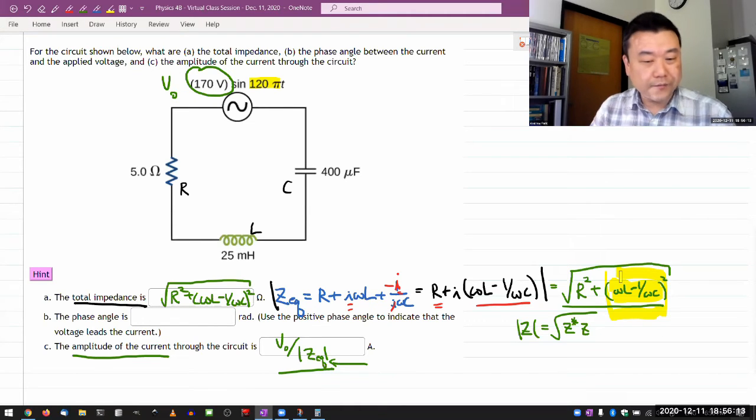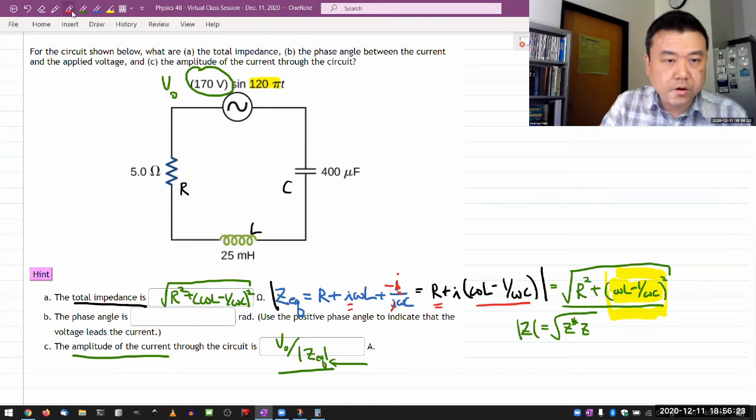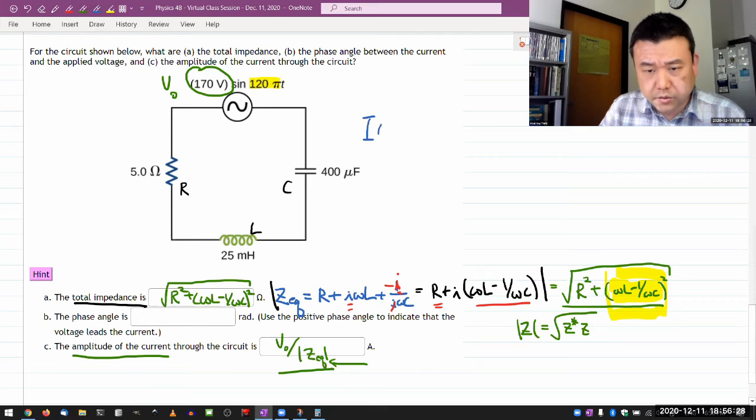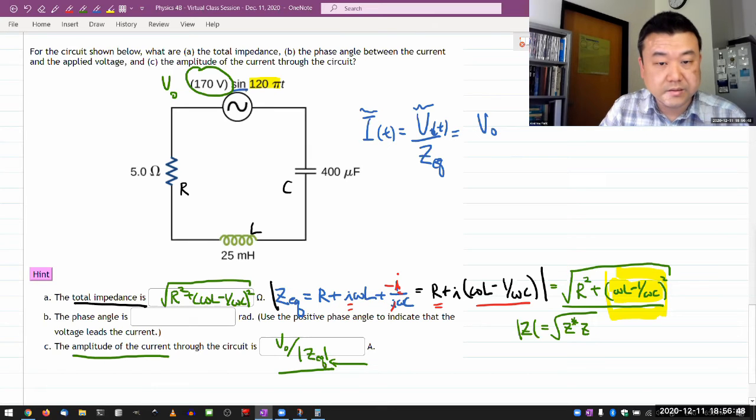And to get the phase angle, again, you... So let me see if I can do it in a more straightforward way. So using Ohm's law, it should be the current through the circuit is equal to the voltage divided by the impedance and these are all complex quantities. So the current through the circuit should be my V naught. Oh, and this is sine.